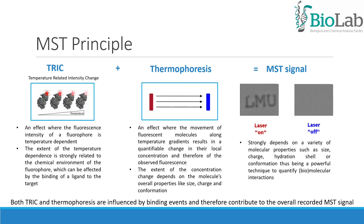Both TRIC and thermophoresis are influenced by binding events and therefore contribute to the overall recorded MST signal. TRIC is an effect where the fluorescence intensity of a fluorophore is temperature-dependent, and the extent of the temperature dependence is strongly related to the chemical environment of the fluorophore, which can be affected by the binding of a ligand to the target. Thermophoresis is the movement of fluorescent molecules along temperature gradients.